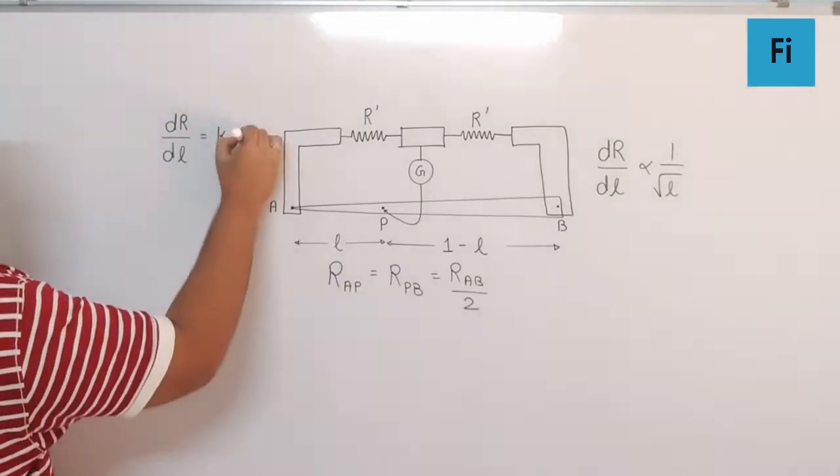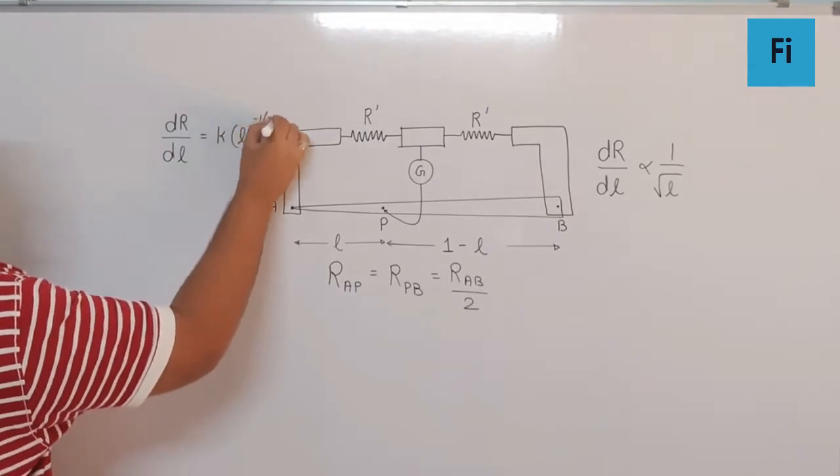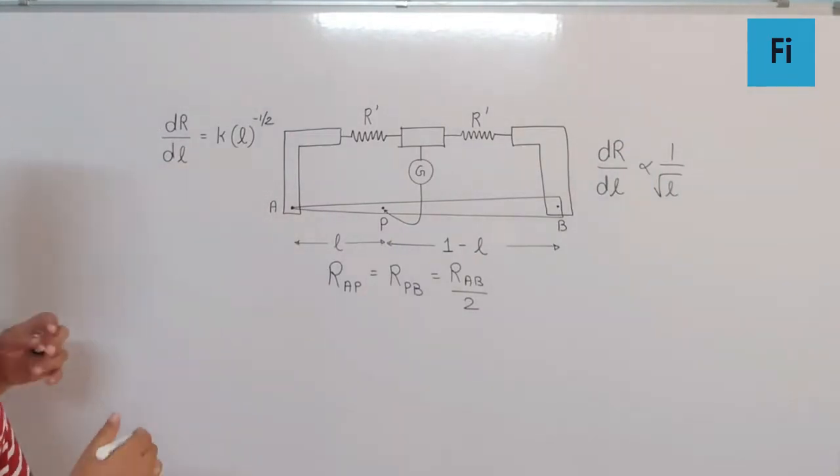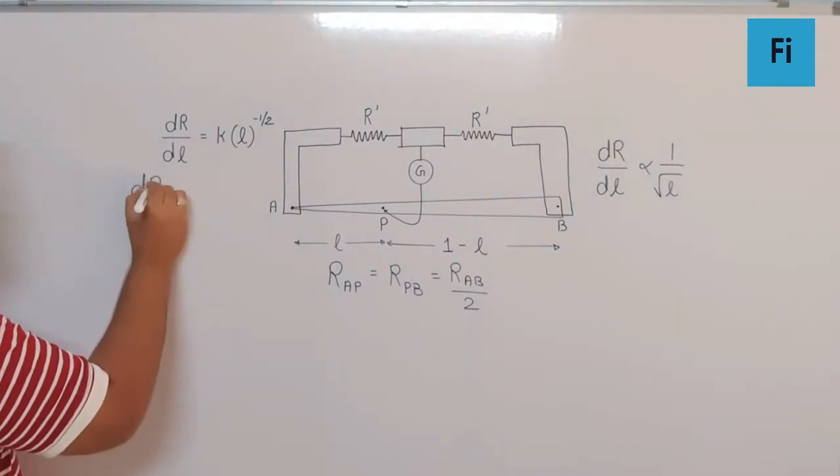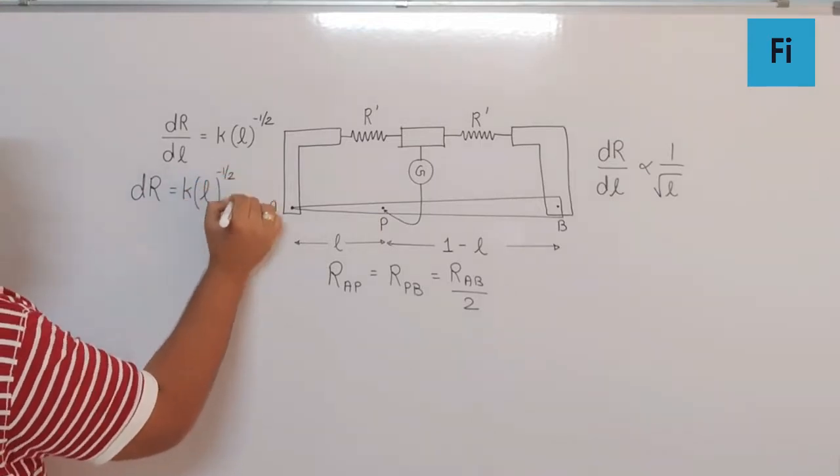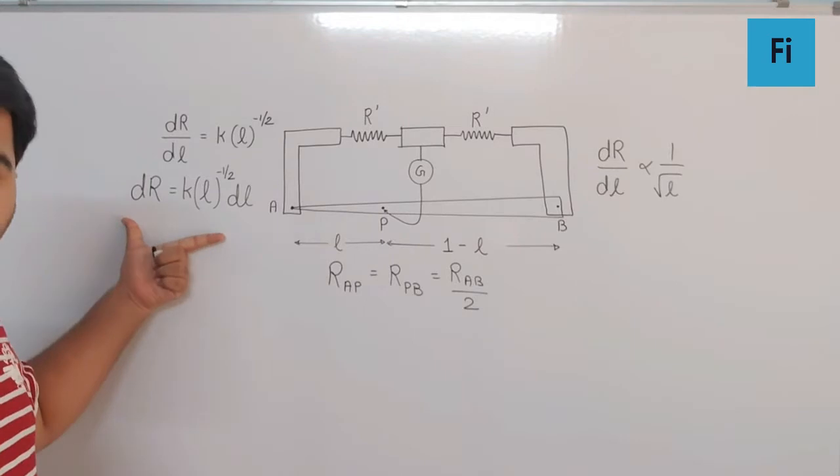If I apply that logic, I can say dR/dL = k L^(-1/2). One upon root L is L^(-1/2). If you rearrange this equation, we get dR = k L^(-1/2) dL, which means we need to go for integration.